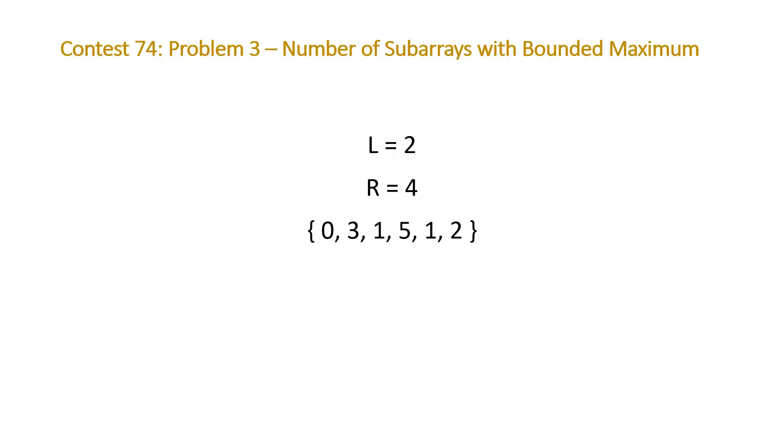Let's take a look at an example. Here we have L equal to 2, R equal to 4, and an array with the values 0, 3, 1, 5, 1, and 2. The question is asking us how many subarrays are there that have a maximum value in the subarray between L and R inclusive.